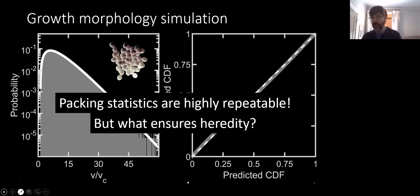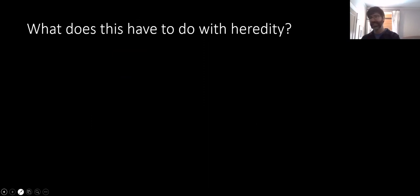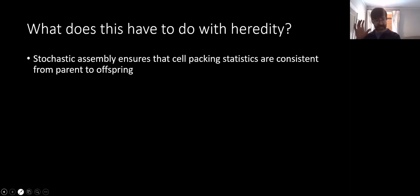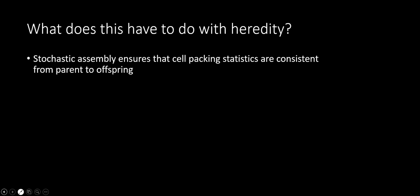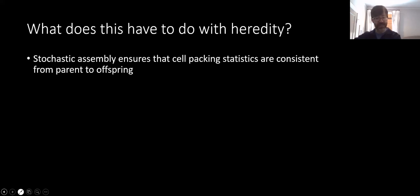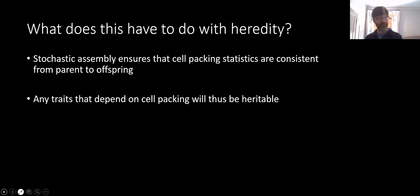You might be thinking, but why does this have to do with heredity? So let's pause and connect these dots. The idea is this random growth of cells in snowflake yeast clusters ensures that you have these maximum entropy packing statistics, and those packing statistics will then be consistent from parent to offspring. Because of that, any multicellular traits, any group level traits that depend on cell packing and cell packing statistics will thus be heritable. They'll be similar from parent to offspring, and that's without any developmental genes. It's the stochastic assembly of these groups without correlations that ensures that this is true.